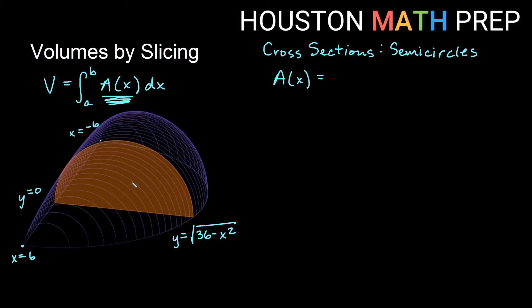I need to figure out a formula for A of x. So A of x is going to be the area of each semi-circular slice. This will depend on the shape. This is a semi-circle, so what's the area of a semi-circle? Well, the area of a circle is pi r squared. So if I want a half circle or a semi-circle, then the area formula should be one half pi r squared.